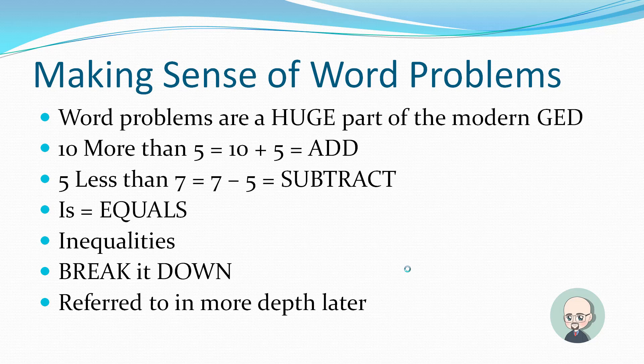Making sense of word problems. Word problems are a huge part of the modern GED. If you tried to take the GED years ago, you may be shocked at how much word problems play a major part in this exam. There's some keywords I want you to bear in mind. More than, less than, is. If we said 10 more than 5 people or whatever the case may be, you got to add them. So it's 10 plus 5. If I said 5 less than 7 people were involved, 7 minus 5, you have to subtract. You got to look for these keywords. Is usually means equals. There's inequalities. There's certain words. When they give you a budget, it's usually an inequality. You got to break it down. You got to look at these things and break it down. Tear apart the word problem. Turn it into numbers. We're going to refer to it in some more depth later, but that's it for now.